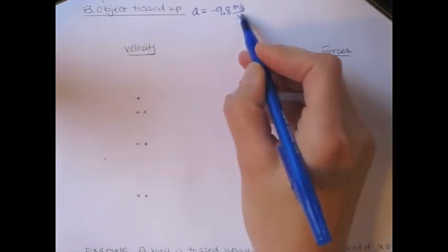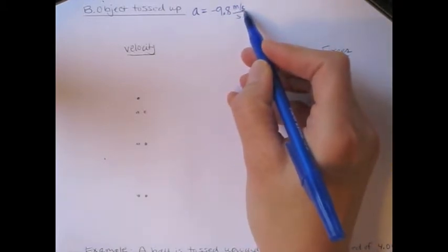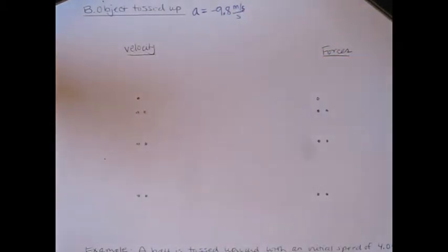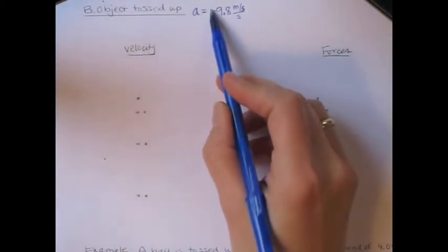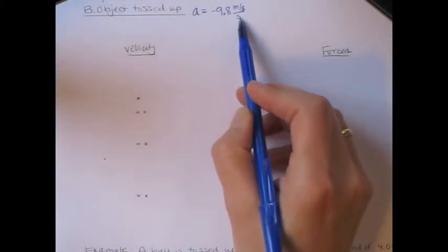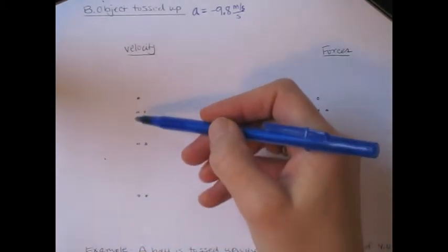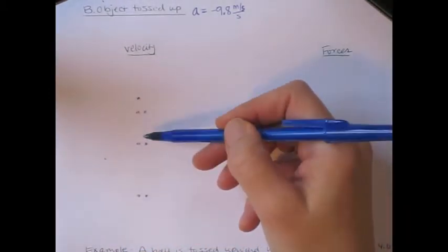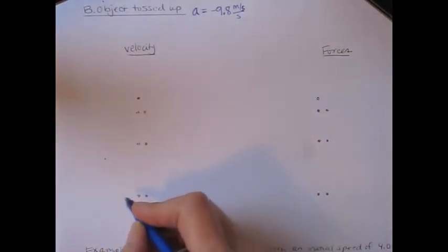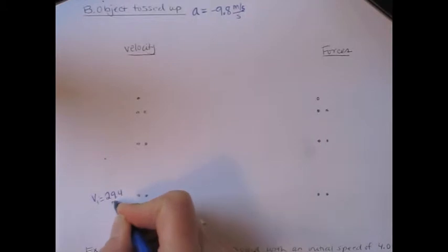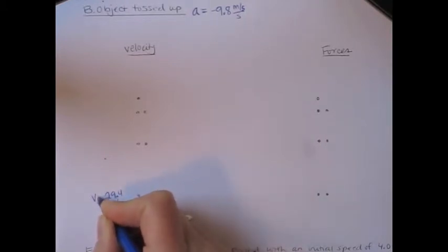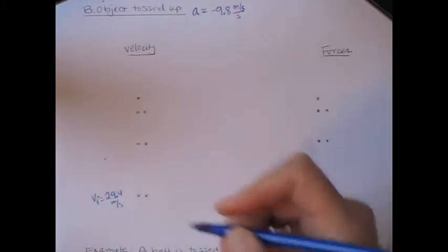This means that the velocity changes by negative 9.8 meters per second every second. For this example, I'm going to work with specific numbers so you can really see what it means for the velocity to change by this amount every second. I'm going to conveniently pick numbers so that after 3 seconds the object will be at its highest point, which means I'm going to start it with a velocity of 29.4 meters per second — and it's moving upward, so that's a positive velocity.